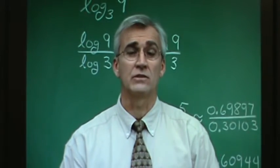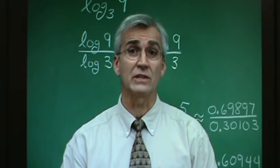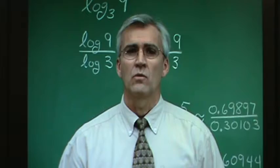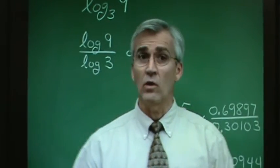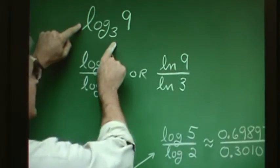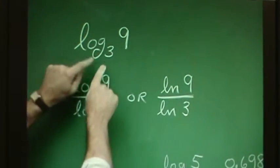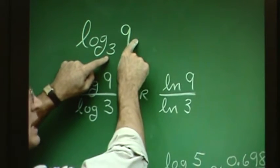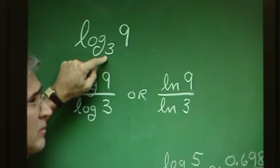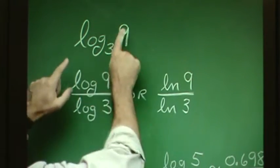Since the calculator only has logarithms of base 10 and base e, we might wonder how we're going to figure out this problem: the log of 9 in base 3. We certainly know the answer — it's the exponent applied to 3 that gives 9. 3 to what power gives 9? Well, 3 squared is 9. But let's talk about a technique for using the calculator to evaluate this.